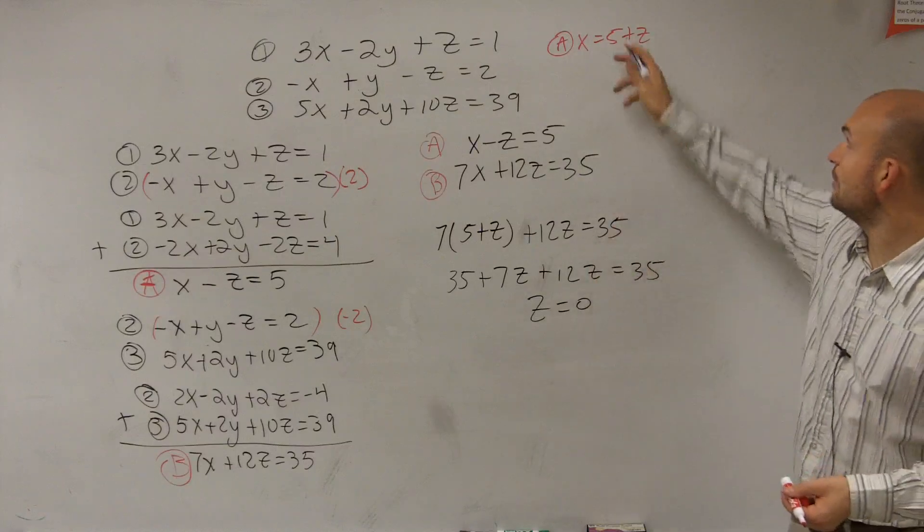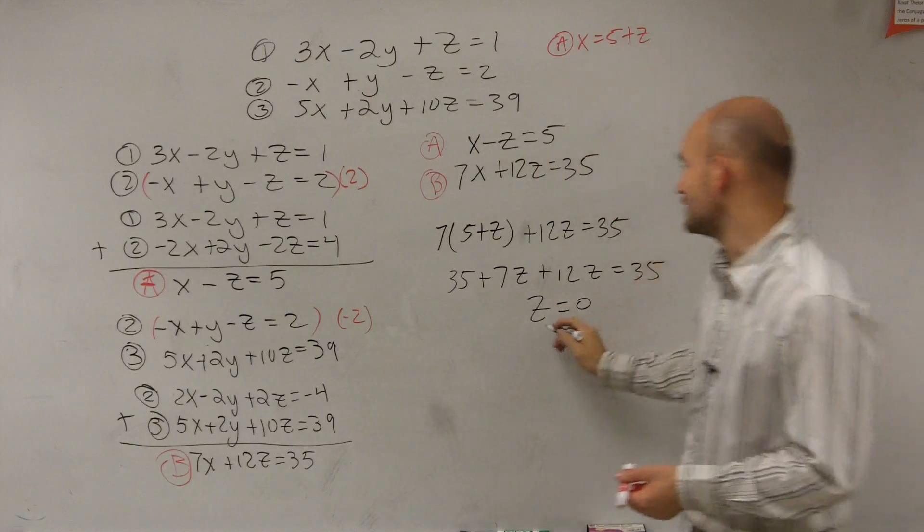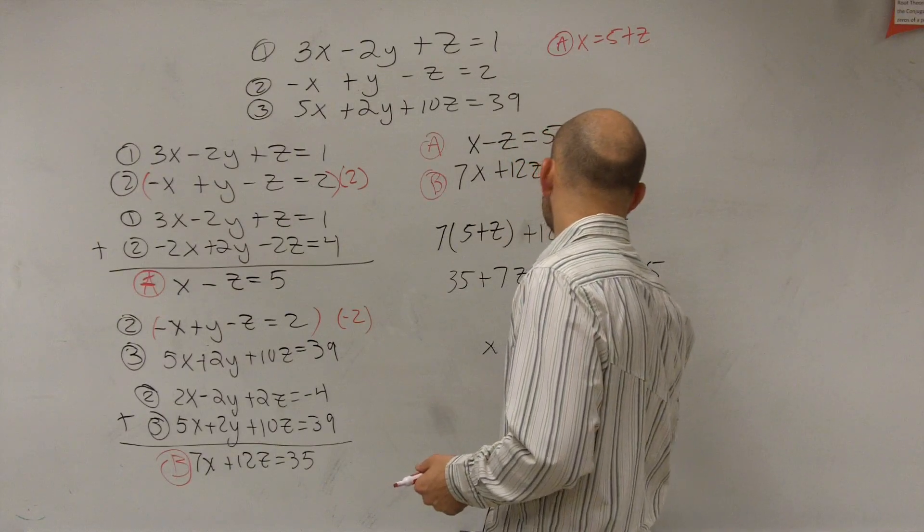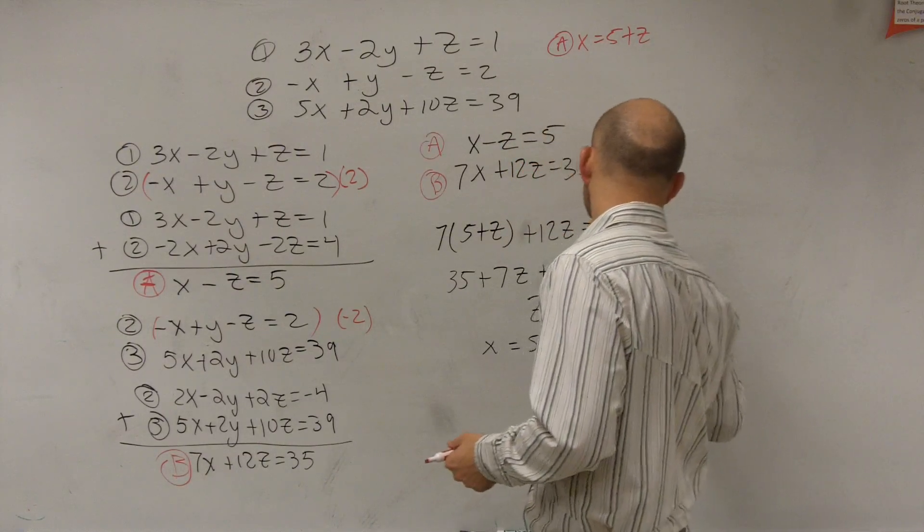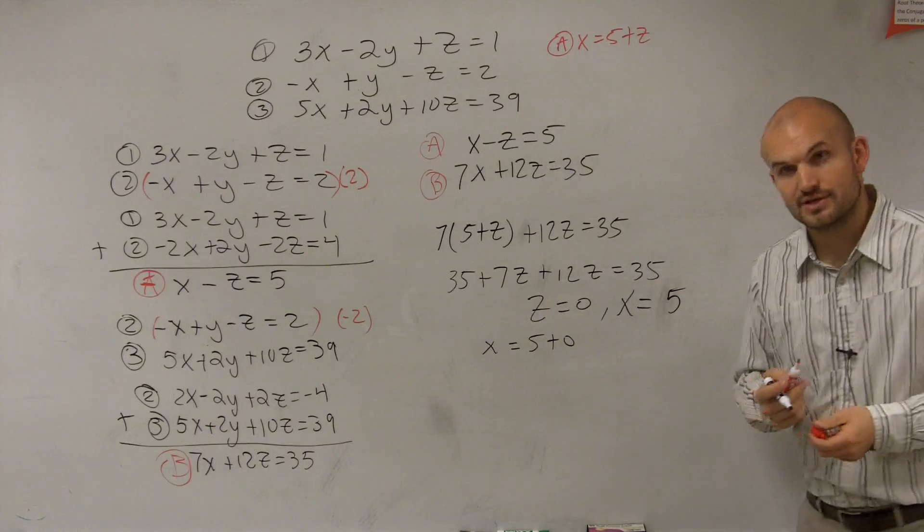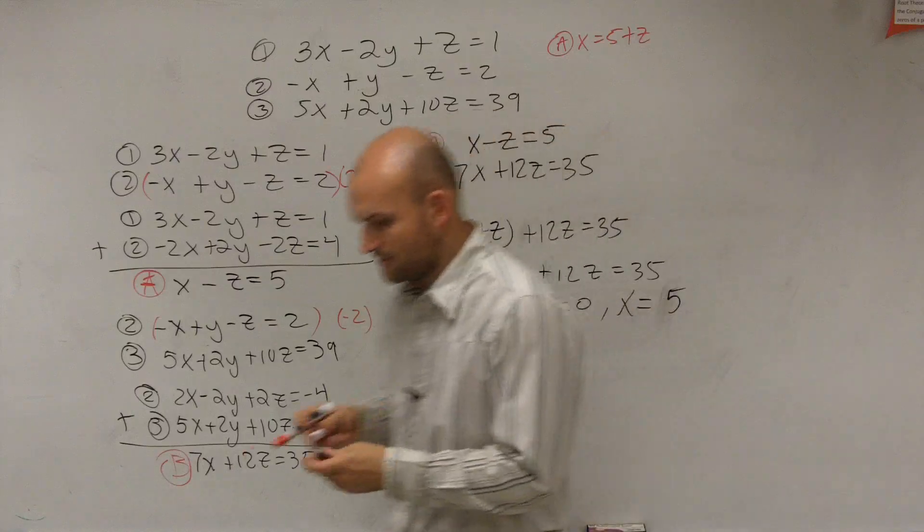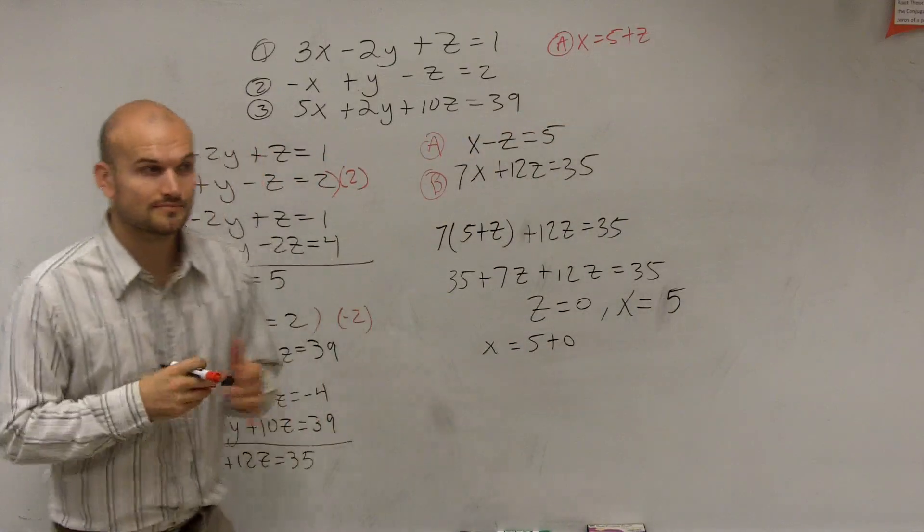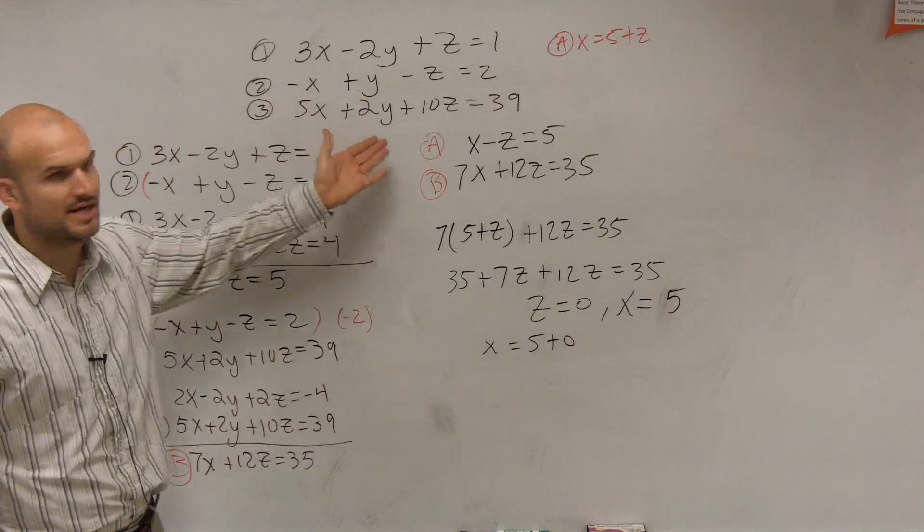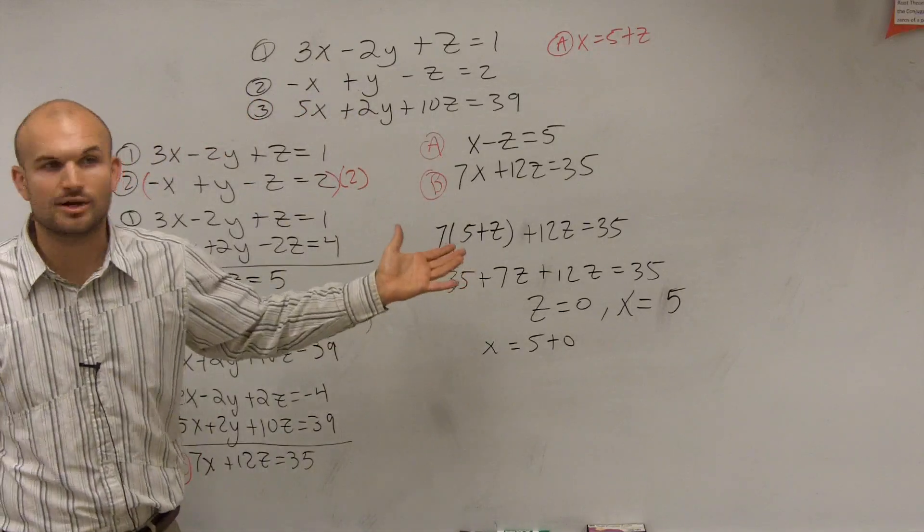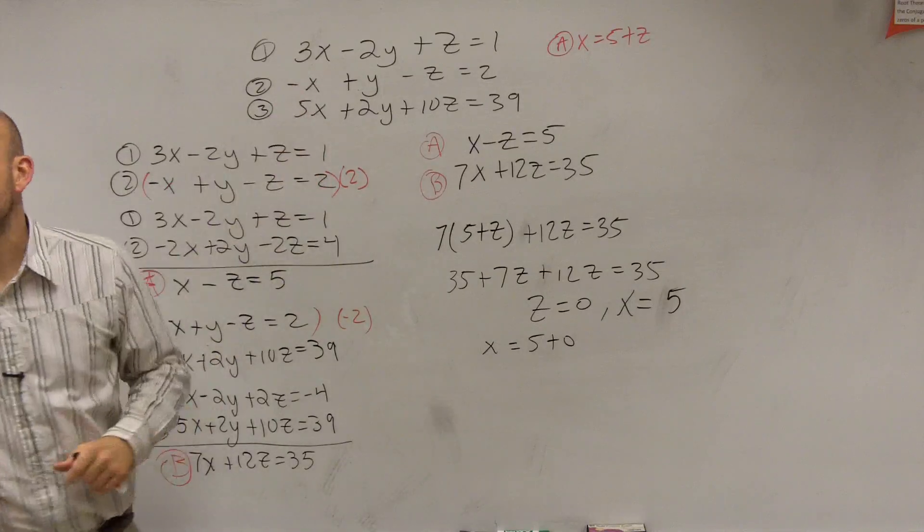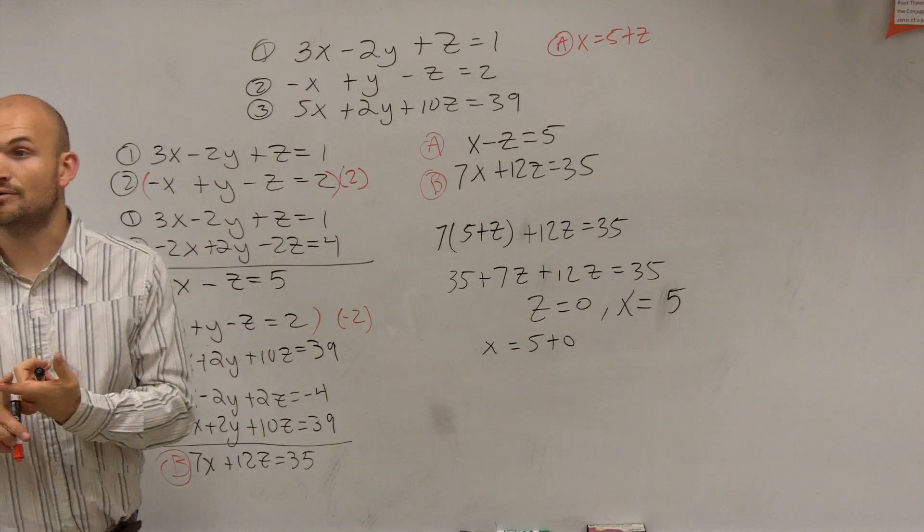So then you plug 0 into the equation, and you say x equals 5 plus 0. So you can now say x equals 5. You're going to have an intersection. So therefore, now we know what 0 is, we know what 5 is. I just now need to plug those into one of these equations. Just pick one, whatever one you want to pick, pick one. Because we still need to find the value of y. We only have x and z.